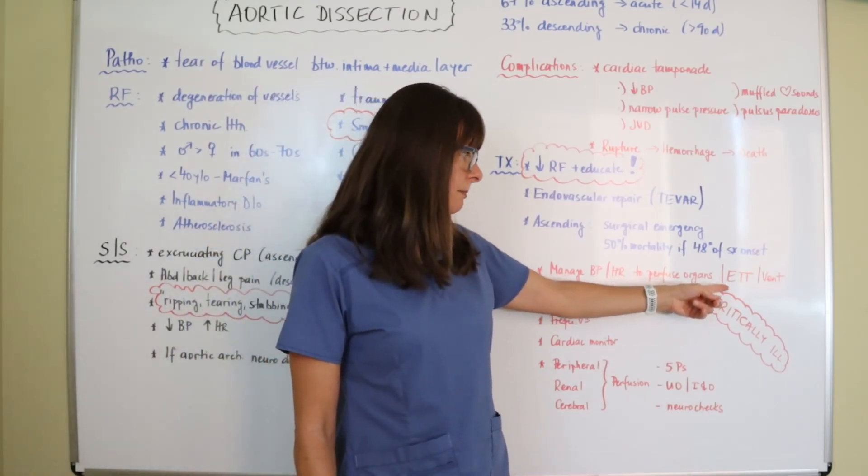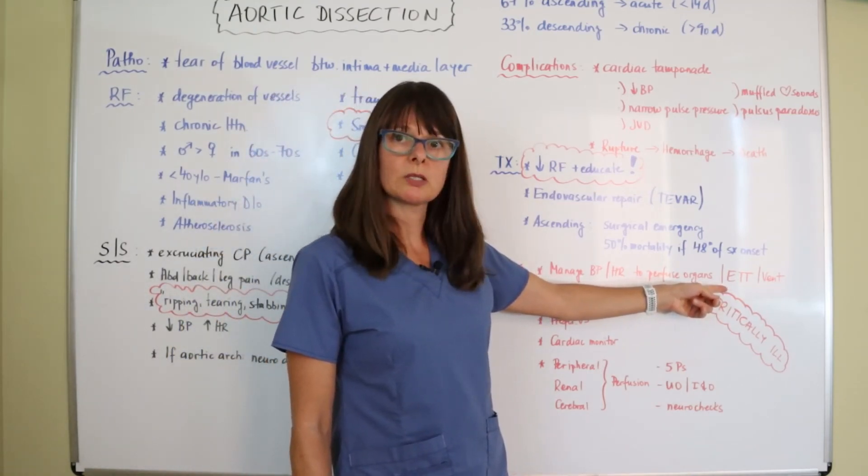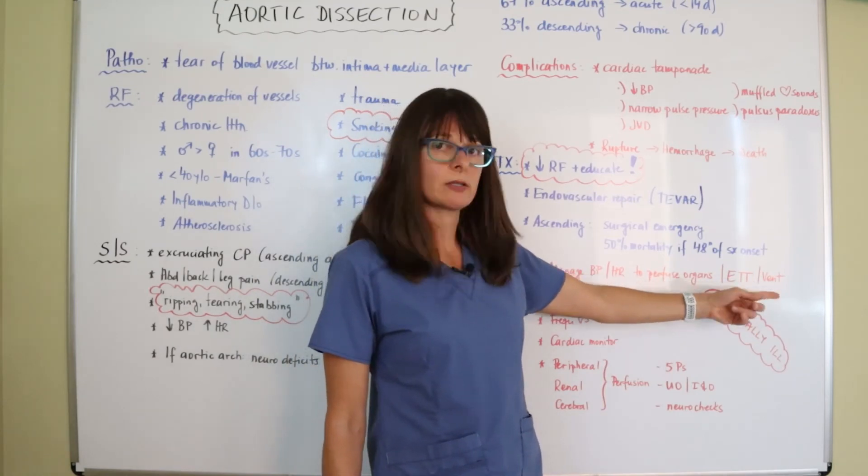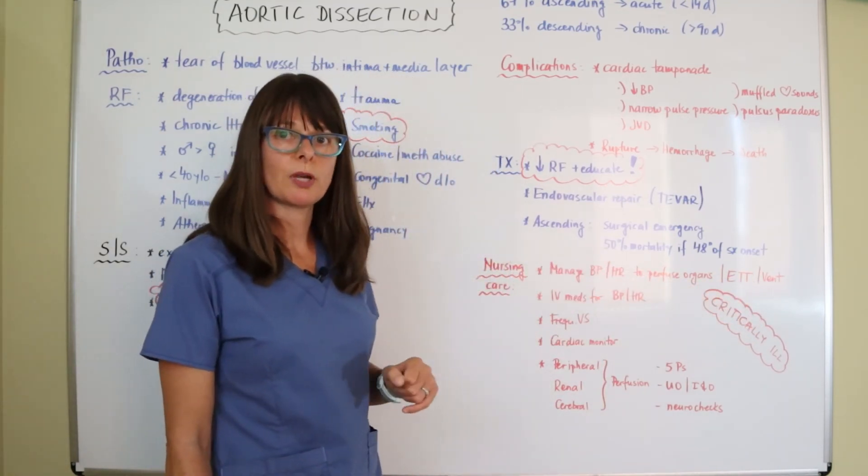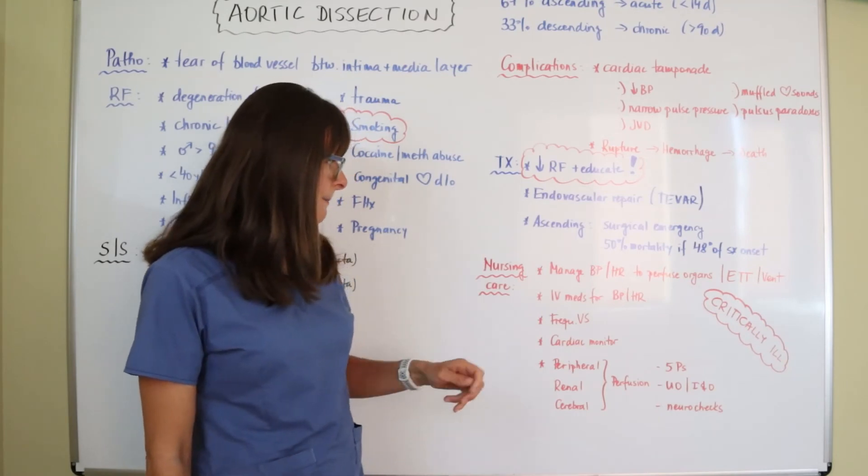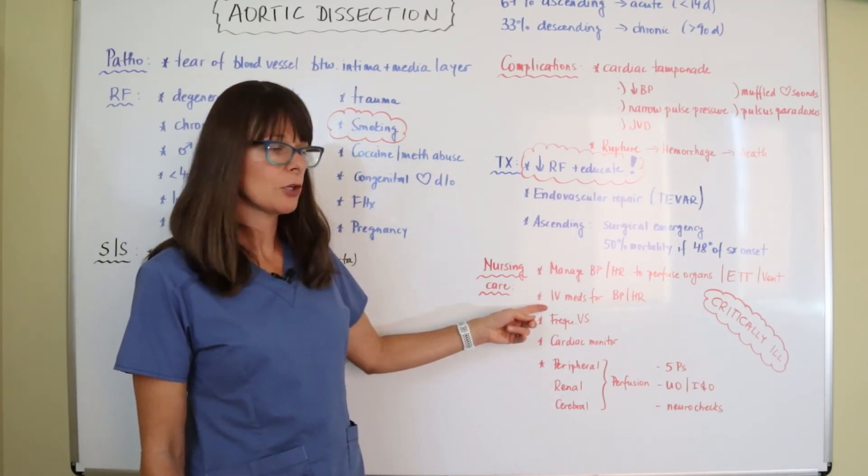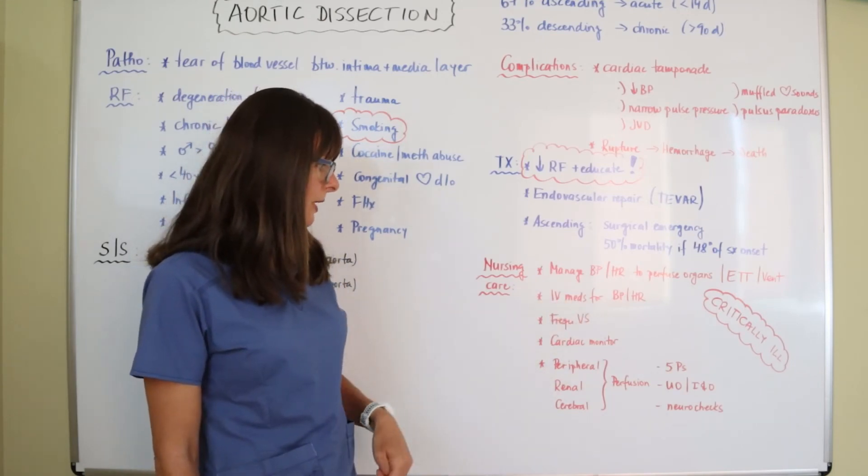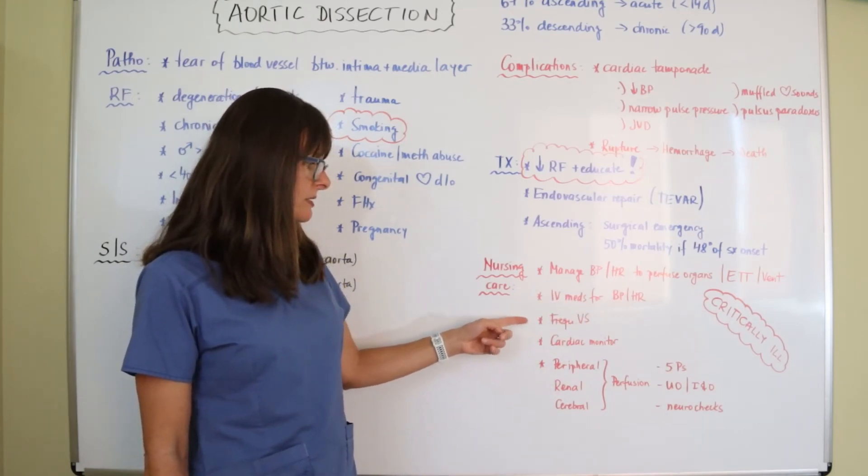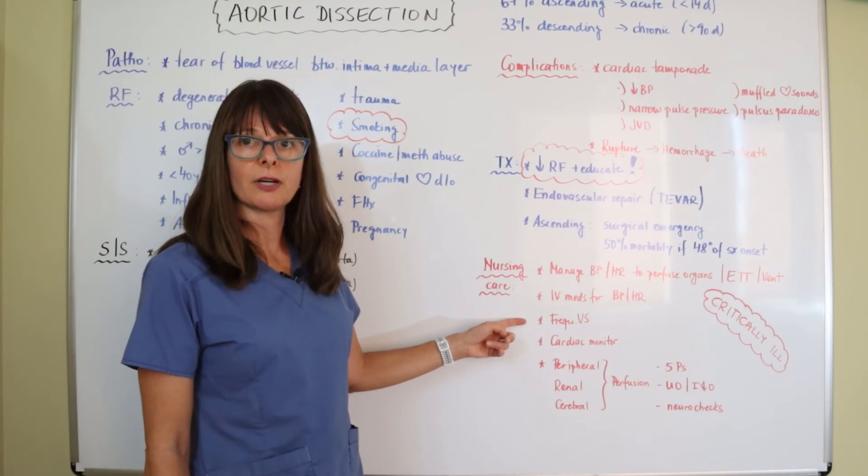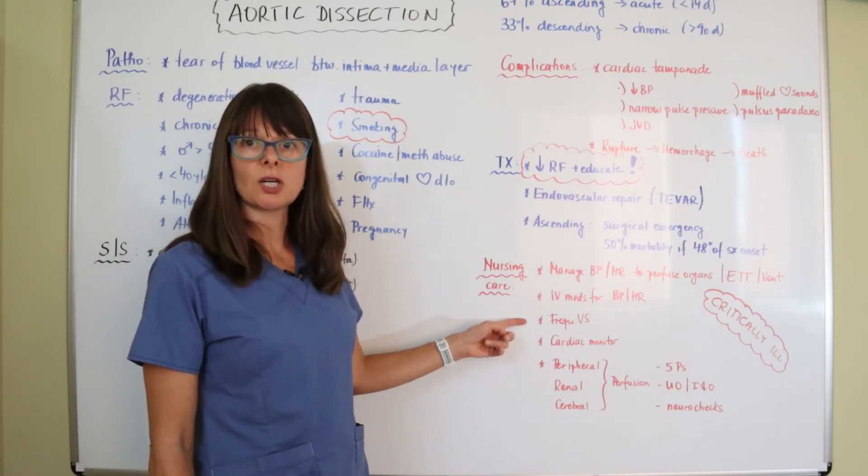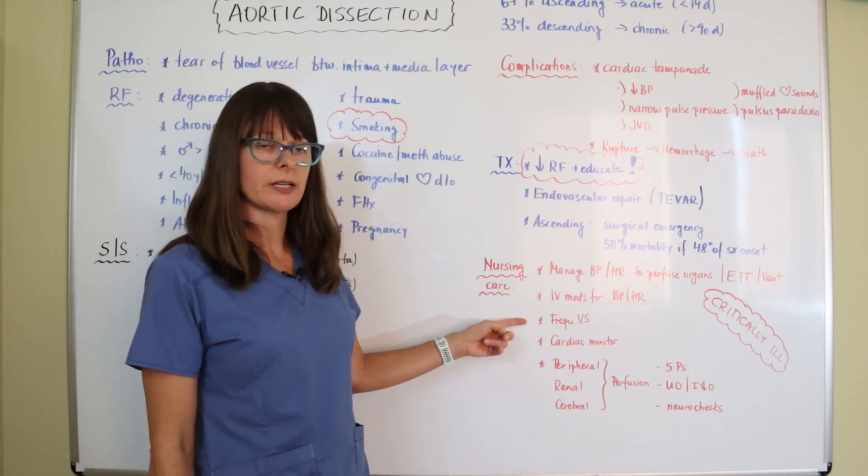And then many times the patient will be intubated. So we'll also have to manage that as well as the ventilator, of course, in collaboration with our respiratory therapists. Certainly we might need to manage these IV vasoactive medications to maintain the blood pressure and heart rate, frequent vital signs. This might be somebody that you have an arterial line or at least check the blood pressure every five minutes if that is not the case yet.